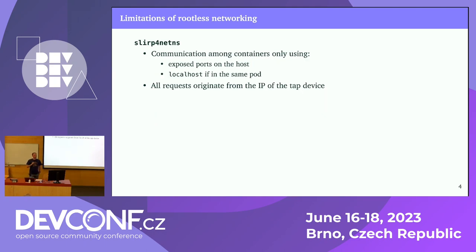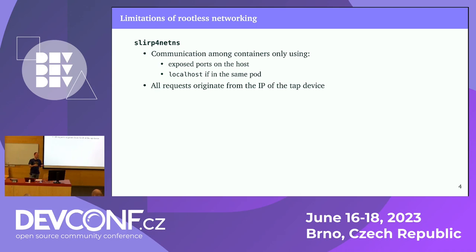Running things as rootless Podman brings us to the issue of networking. If you want to offer a service, you probably want networking in your container. In rootless Podman there are basically two options. One is slirp4netns, which works using a tap device but has a couple of limitations: you can only communicate among containers via exposed ports on the same host or via localhost, and all requests will appear to originate from the IP address associated with the tap device, so you lose the information about where the request actually came from.